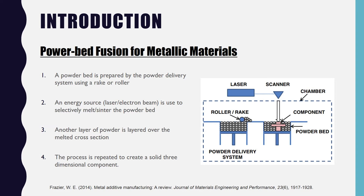Let me first introduce powder bed fusion for metallic materials. The powder bed is usually prepared by a powder delivery system that uses a rig or roller, as can be seen in the image on the right. Then an energy source — either a laser beam or an electron beam — is used to selectively melt or sinter the powder bed.